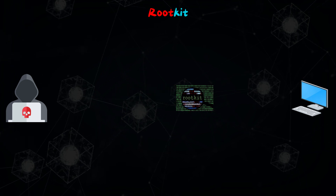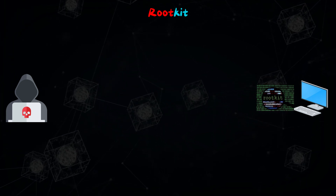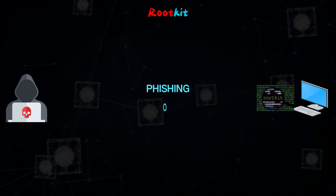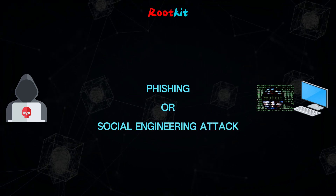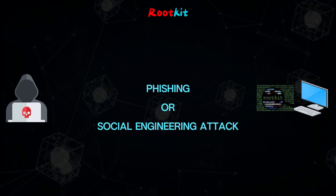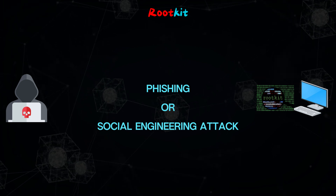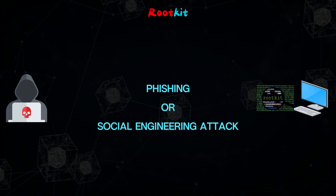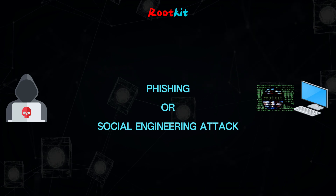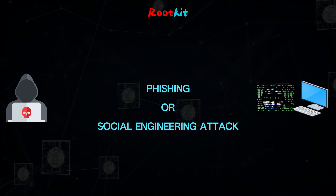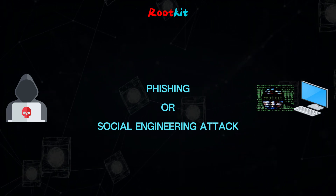Hackers install rootkits on target machines in a number of ways. The most common is through phishing or another type of social engineering attack. Victims unknowingly download and install malware that hides within other processes running on their machines, and give the hackers control of almost all aspects of the operating system.